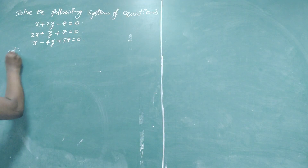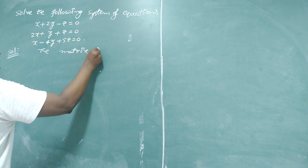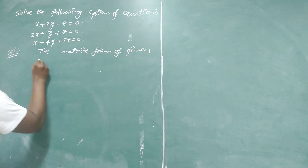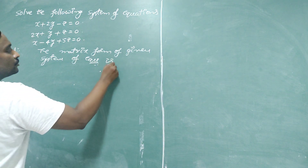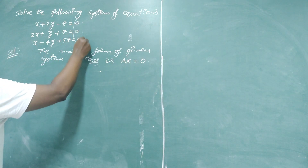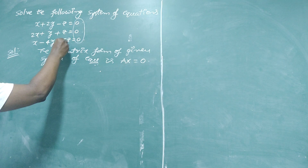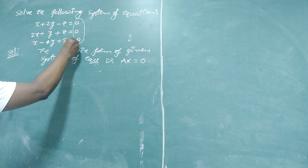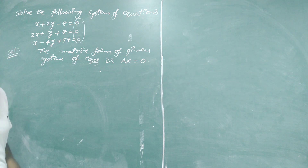First of all, write the matrix form. The matrix form of the given system of equations is Ax = O. We observe that all right-side constants are zeros — that is why the given system is said to be a homogeneous system. If all constants on the right side are not zero, then the given system is said to be a non-homogeneous system.